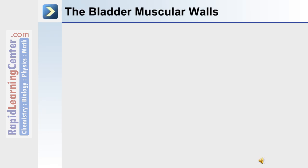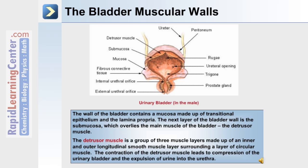The muscular wall of the bladder contains a mucosa made up of transitional epithelium and lamina propria, followed by a submucosa, which overlies the detrusor muscle. The detrusor muscle is a group of three muscles consisting of inner and outer longitudinal smooth muscle surrounding a layer of circular muscle. Contraction of the detrusor muscle leads to compression of the urinary bladder and expulsion of urine into the urethra.